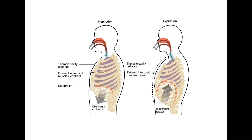Before getting into the actual mechanism of the respiratory system, I have to talk about breathing in and breathing out. Breathing in is called inspiration — you're bringing air in and your lungs and rib cage must expand. Intercostal muscles play a role in that expansion, and the diaphragm moves downward to make room for the expanding lungs. That's what happens during inspiration.